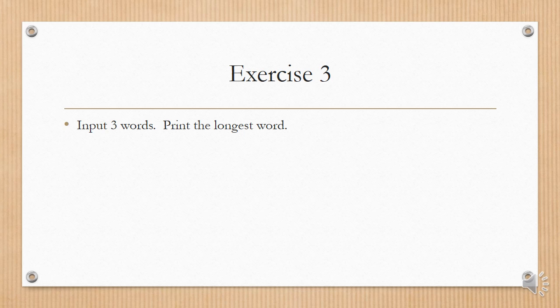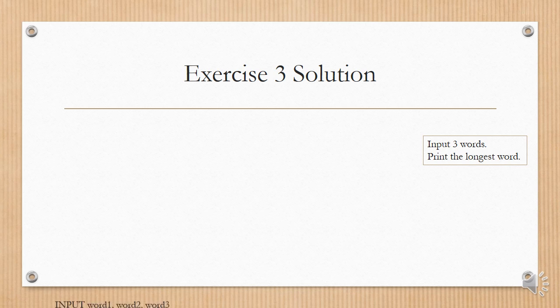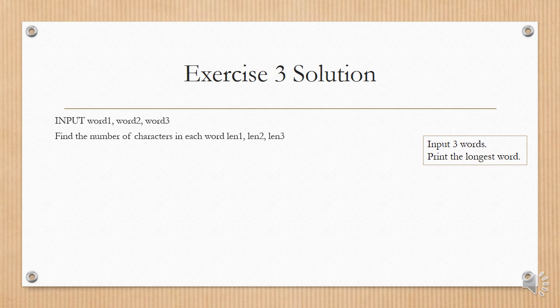Exercise 3 is input three words, print the longest word. We input all three words, and now there's no algorithm syntax for finding the length of a word, so we just write it out and explain what we want to do. Find the number of characters in each word, and put it in len1, len2, and len3.